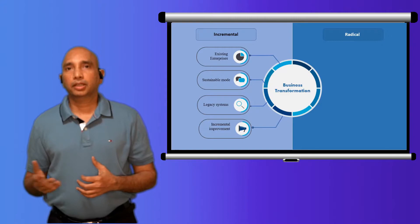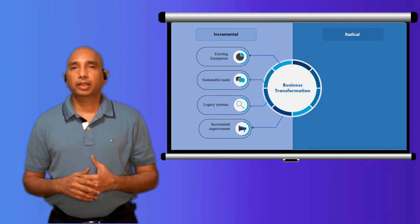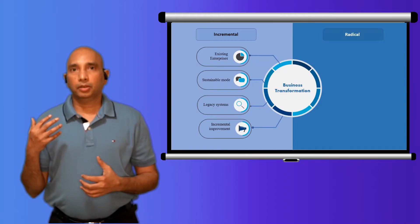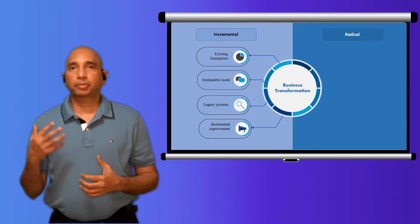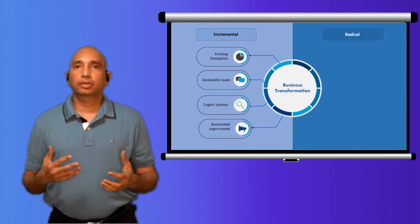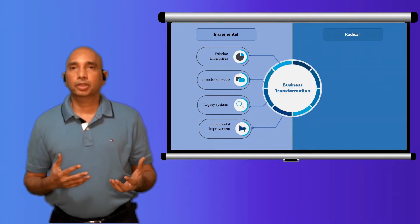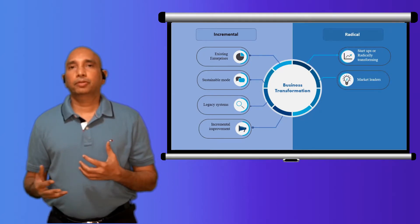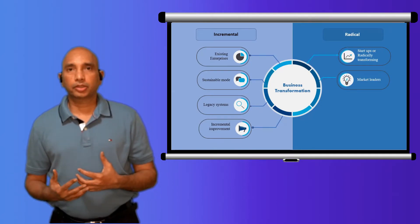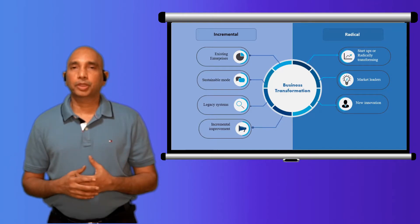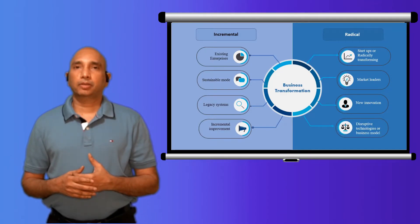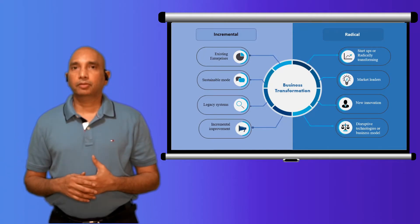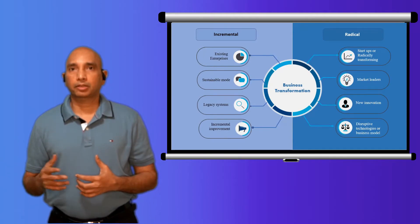Whereas on the other hand we have radical transformations wherein the organizations are trying to make some radical changes, or those organizations like startups who are trying to make their presence in the industry. So they are looking for radical innovations, which could be from a business perspective or from a technology perspective. Those are the two types of transformations that we discussed in my last video.